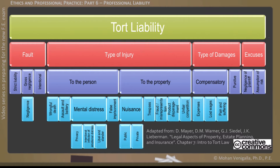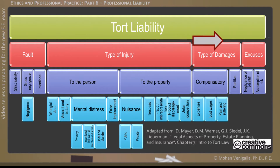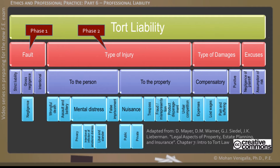Here is how the chart is organized — please browse it from left to right. There are four distinct phases in determining if a tort has happened and making a legal judgment. These four phases, identified in the second level from the top, are: fault, type of injury, type of damages, and excuses.